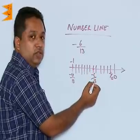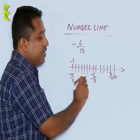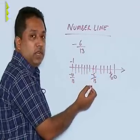So, we have minus 6 by 13. So, this is the way to represent all rational numbers on the number line.